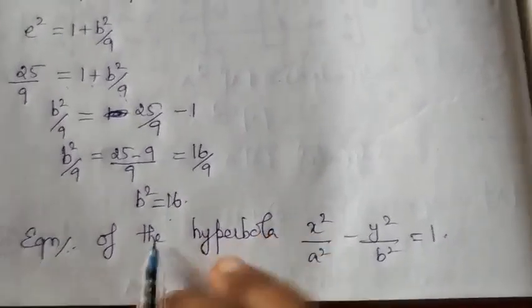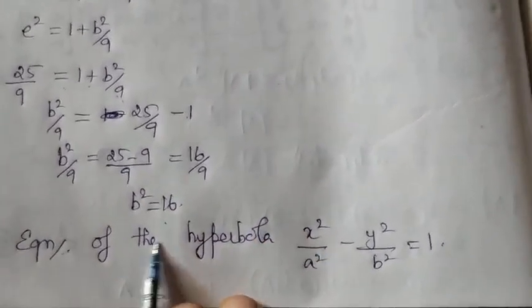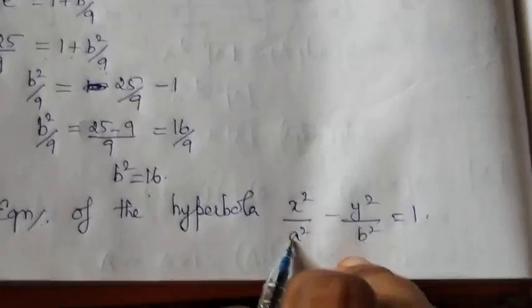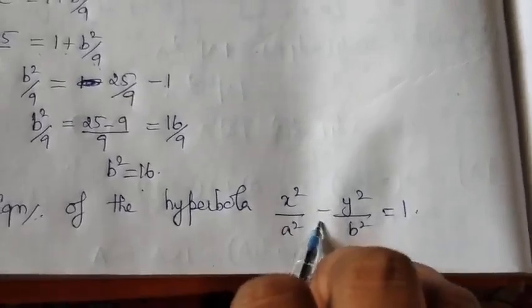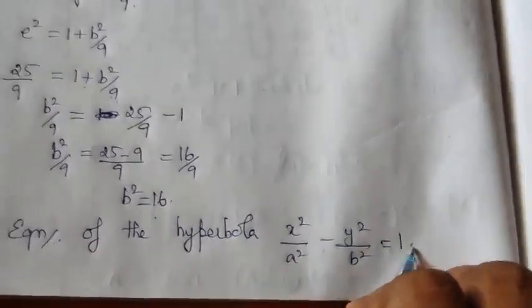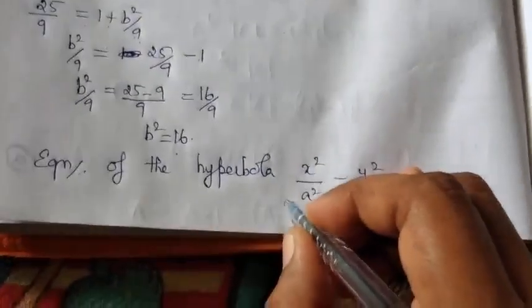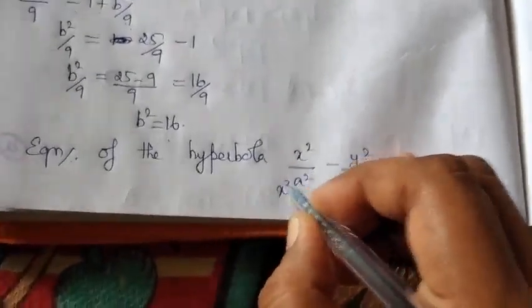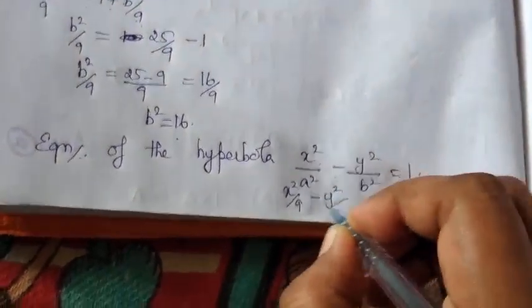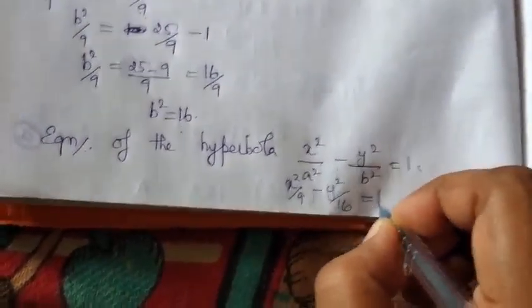The equation of the hyperbola is x²/a² minus y²/b² equals 1. Substituting a² equals 9 and b² equals 16, the final answer is x²/9 minus y²/16 equals 1.